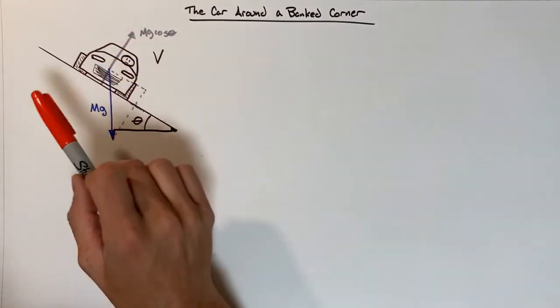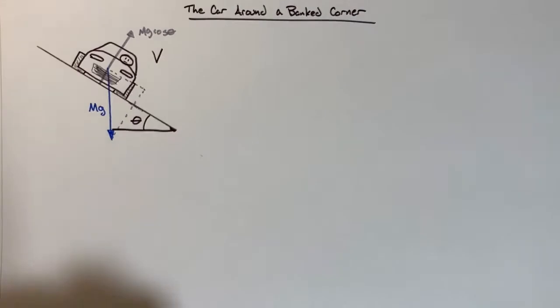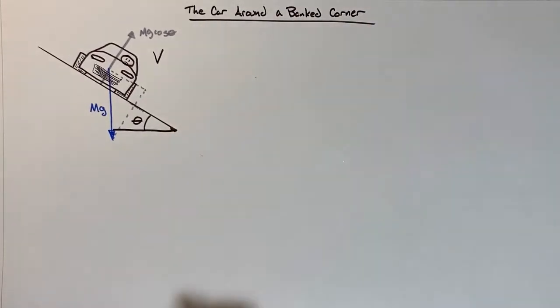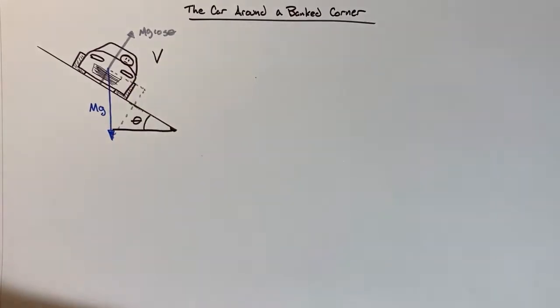In this problem, when the car is going around a banked corner, it's actually accelerating towards a point not at the bottom of the hill but a point over here. It is accelerating centripetally.